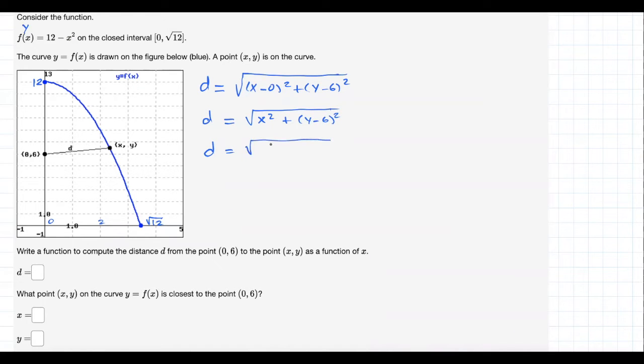Now, y in terms of x. So let's just substitute for y, 12 minus x squared, and the rest stays the same. So this is d equals square root of x squared plus (6 minus x squared) squared, and all this is squared. Done.